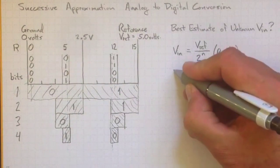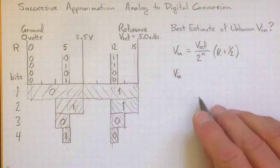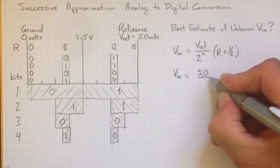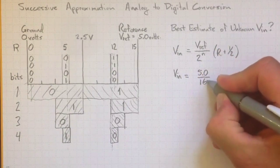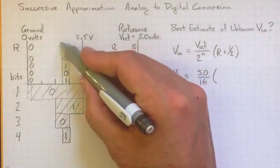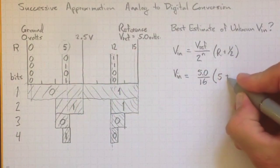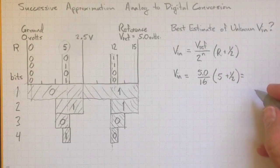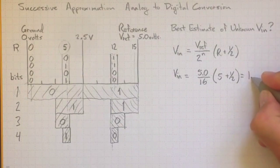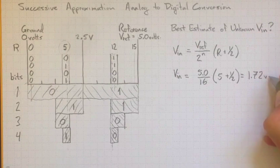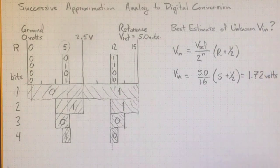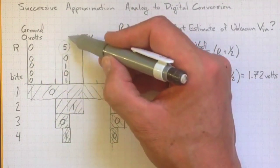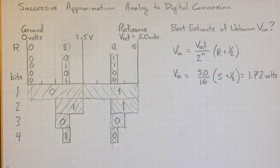So let's take our first example, Vn, this one over here where we've got 5. If our reference voltage is 5 volts, divided by 2 to the n is going to be 16, times the value we've got here, 5, plus a half, and if we punch that value in, we get 1.72 volts. That's not too far off, that would be 1 and a quarter halfway there, so yeah, that's about 1.72 is a pretty good estimate.